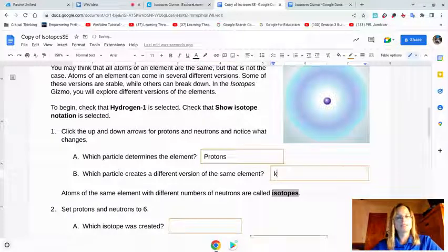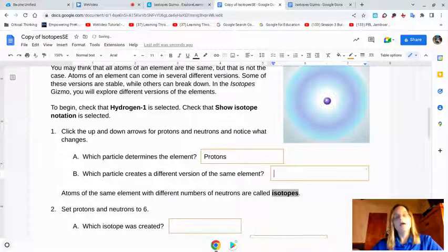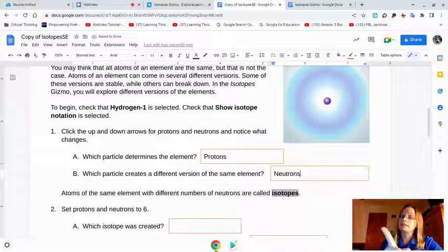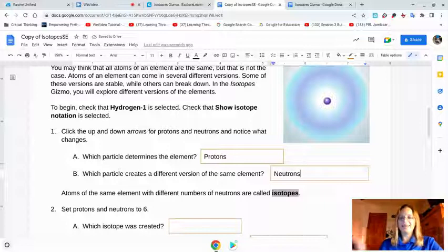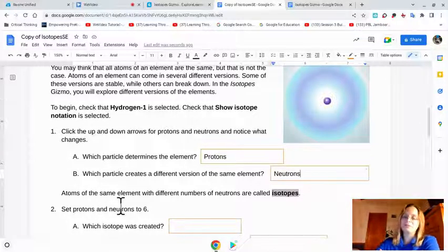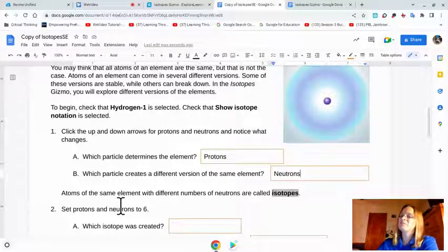And let's move the neutrons around. So here we go. We added a neutron. It's still hydrogen. Another neutron. Still hydrogen. Another, still hydrogen. Which is a different version of the same element? That would be neutrons. When we change the number of neutrons, the element name stayed the same. Atoms of the same element with different numbers of neutrons are called isotopes. You knew this because you've been listening.